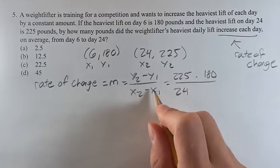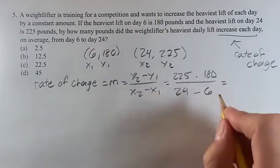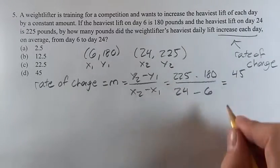We get 225 minus 180 over 24 minus 6. If we subtract these, we're gonna get 45. Subtract these, we get 18.